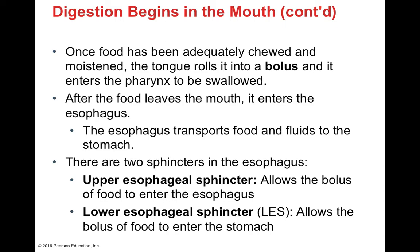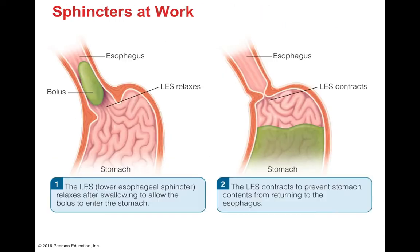The upper esophageal sphincter allows the bolus to enter the esophagus in the first act of swallowing. At the bottom, the lower esophageal sphincter allows the bolus to leave the esophagus and enter the stomach. When the lower esophageal sphincter is relaxed, food is able to enter into the stomach, and as soon as it has entered, the sphincter contracts.